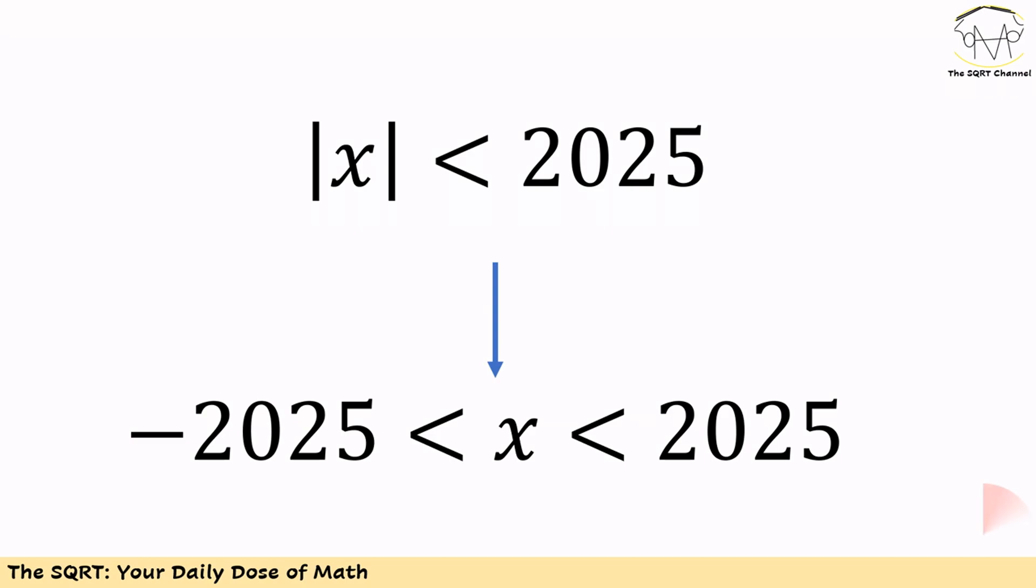Now we need to divide it into two parts. The first part is |x| < 2025. We can write it as x is greater than -2025 and less than 2025.